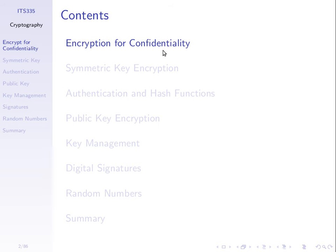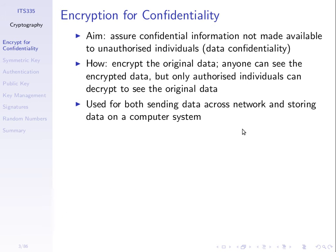Encryption is used for different security techniques. An important one is confidentiality. How do we keep data secret? Encrypt that data. Our aim is to take our confidential information, our message, and make sure that unauthorised individuals cannot read that message. That's what data confidentiality is.